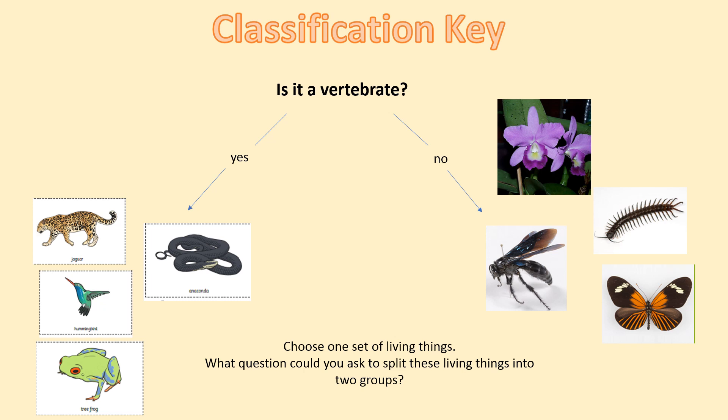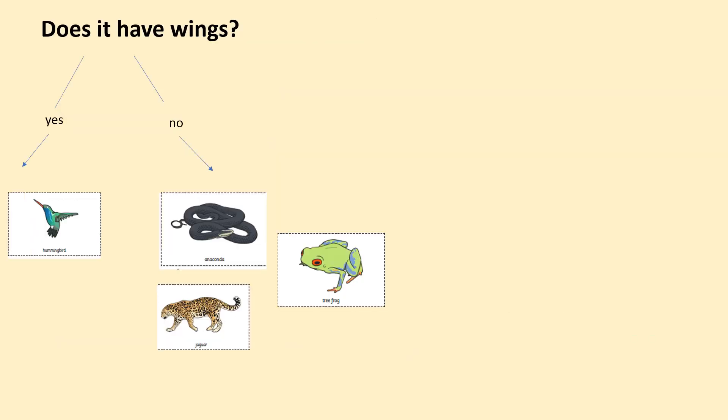Now we're going to choose one set of living things. I'm going to go with the yes group. What question could you ask to split the jaguar, anaconda, hummingbird, and tree frog into two further groups? I would ask: does it have wings? Yes — I have the hummingbird. No — I have the rest of the animals: anaconda, jaguar, and tree frog.